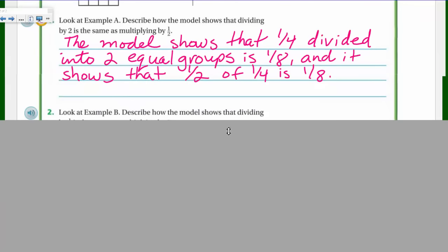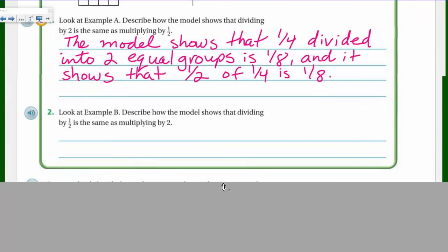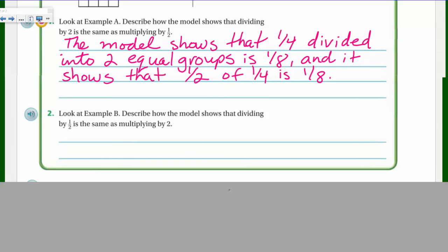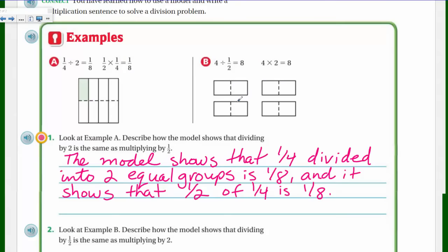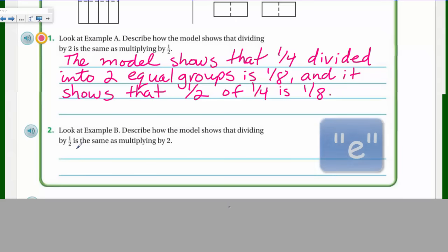Now look at example B. Describe how the model shows that dividing one-half is the same as multiplying two. Well, it's basically the same. It's the same explanation, just with a different problem. Here the model shows that there are eight halves. That's how many halves we have in one, two, three, four wholes. So it shows that four groups of two is eight. Well, go ahead and write that down.